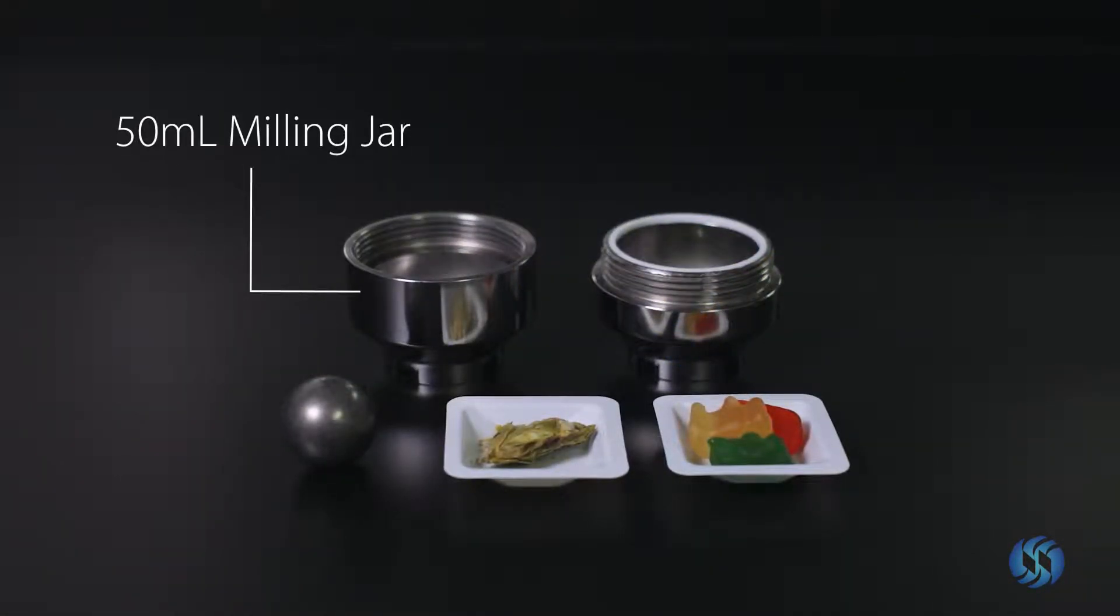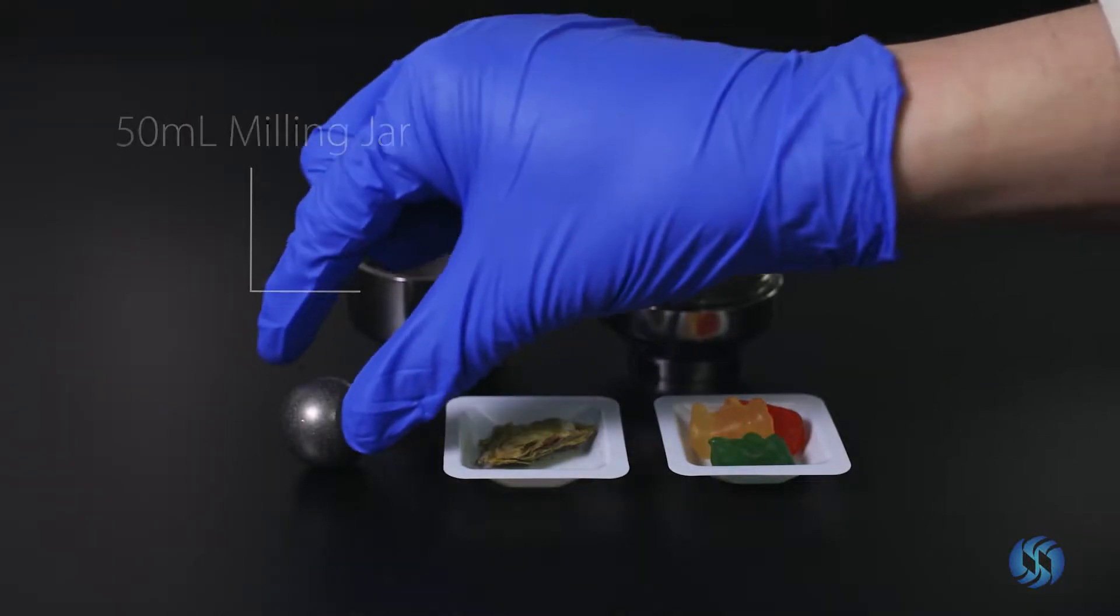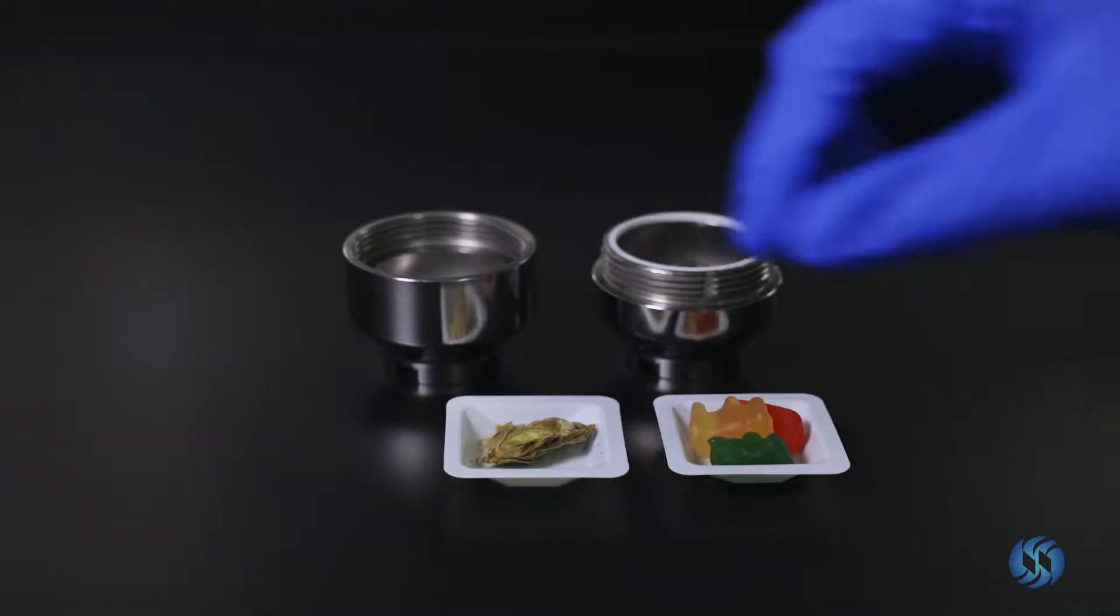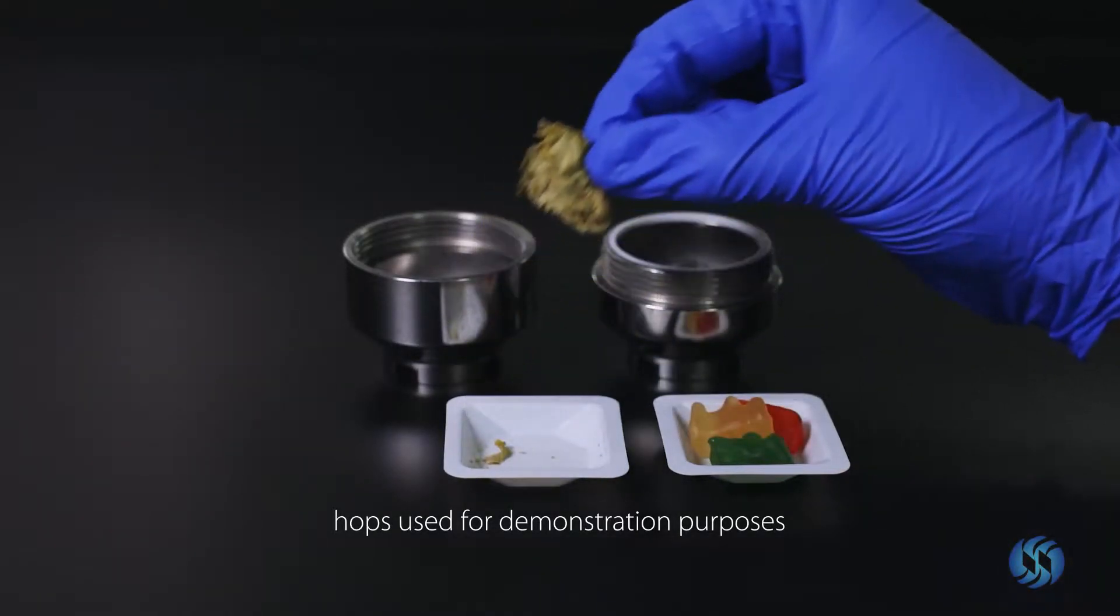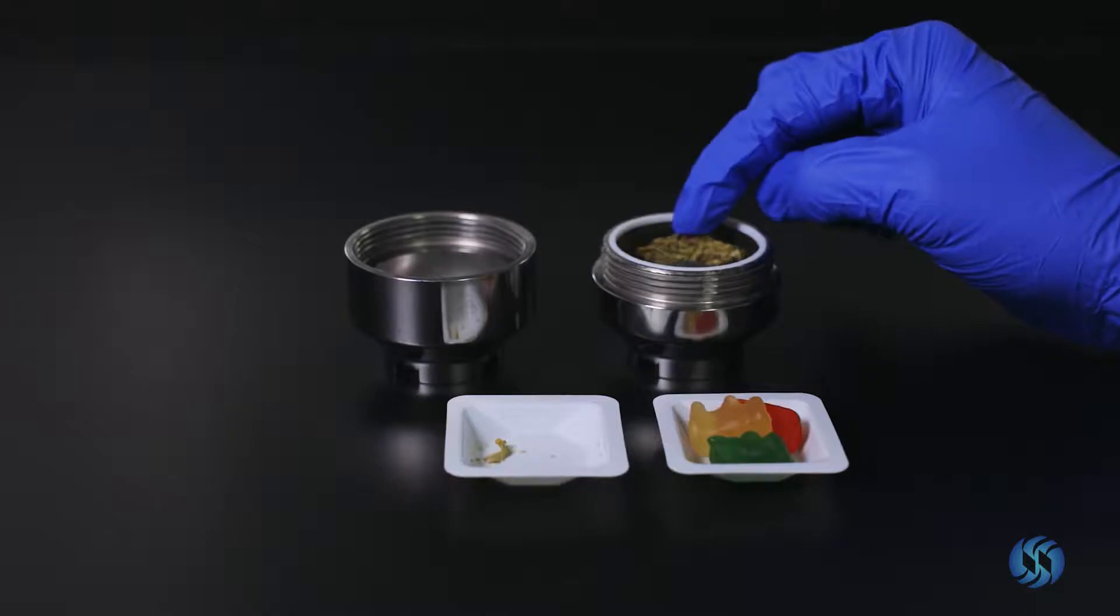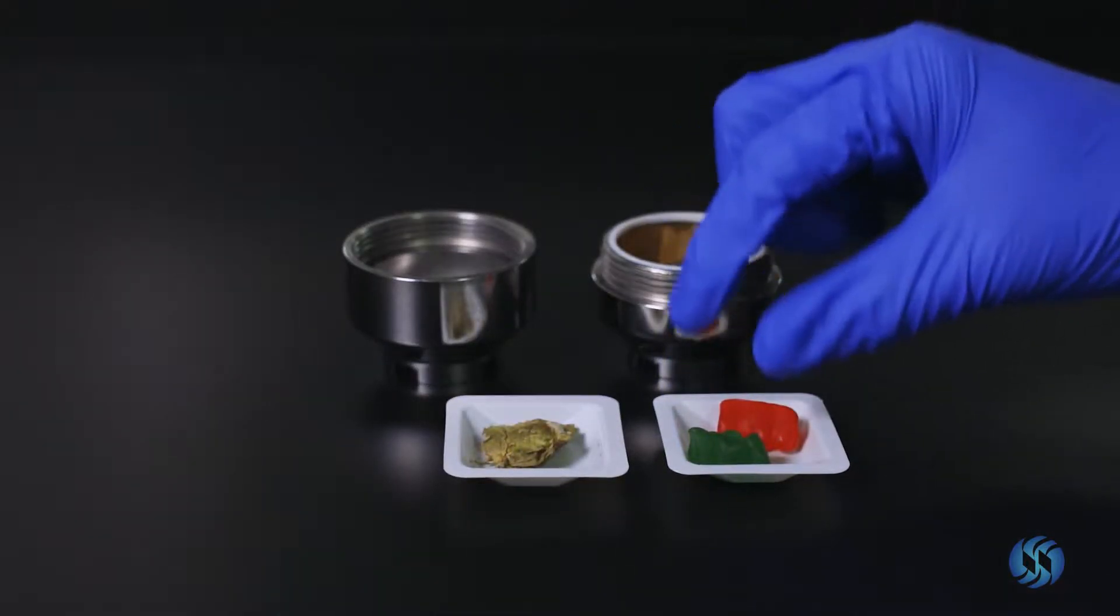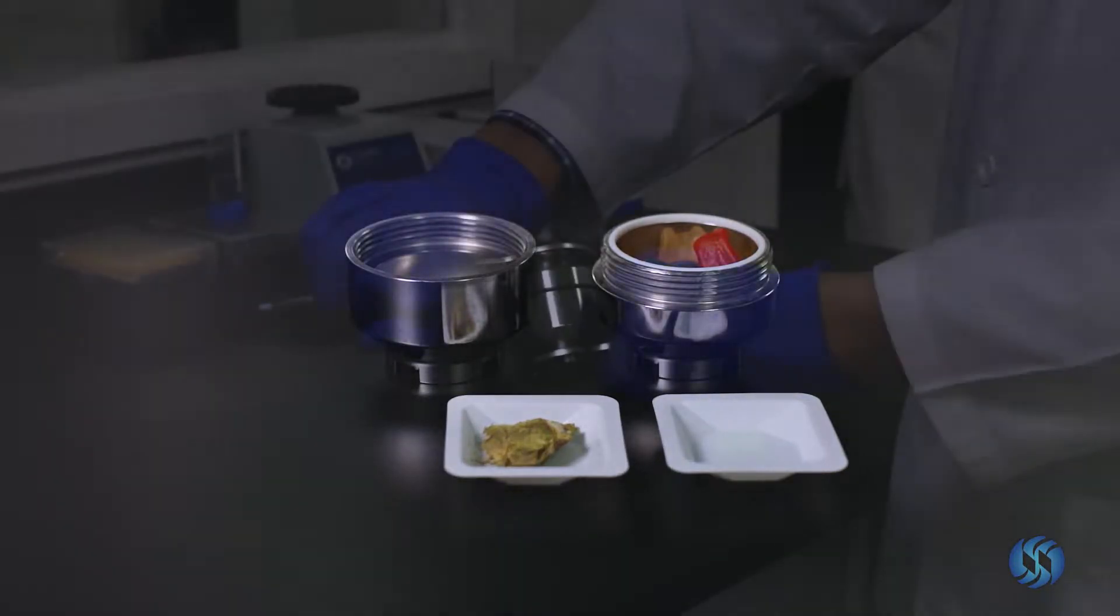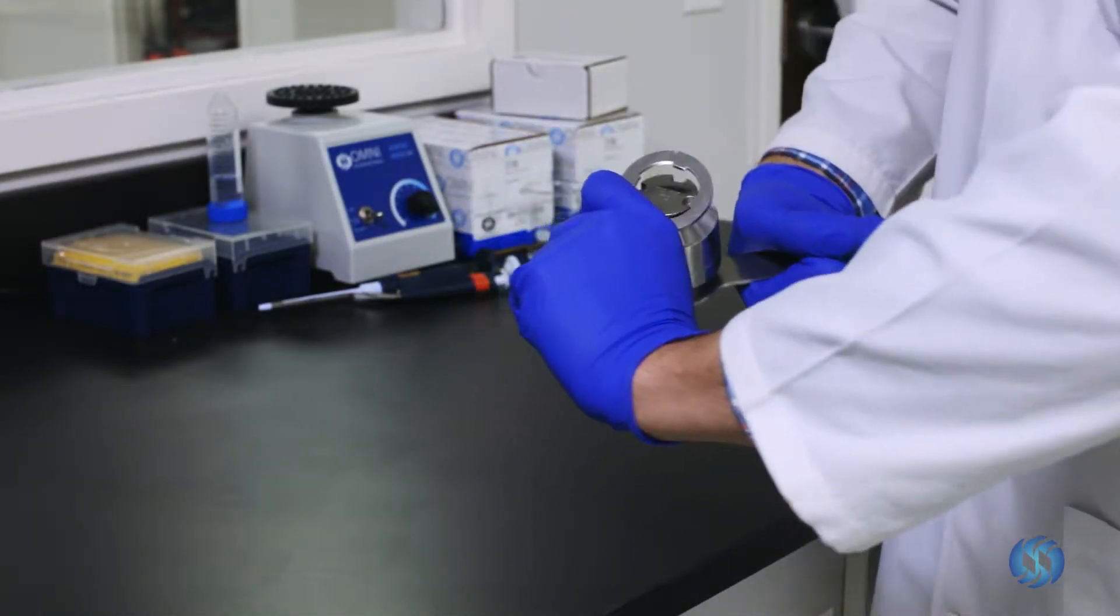Prepare a 50 milliliter stainless steel milling jar with a 25 millimeter milling ball. Place your sample into the milling jar. Ensure that the milling jar is tightly sealed before proceeding.